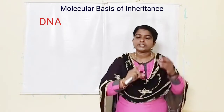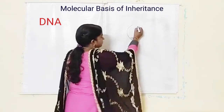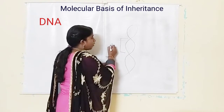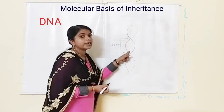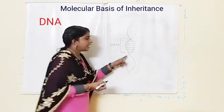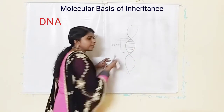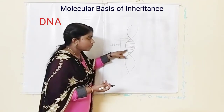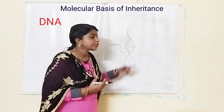The two strands turn in a right-handed fashion to form the double helix. There are many turns, and the pitch of each turn is around 3.4 nanometers. There are roughly 10 base pairs inside each turn, and the distance between two base pairs is 0.34 nanometers. The plane of one base pair stacks over the other, which gives additional stability to the DNA strand.